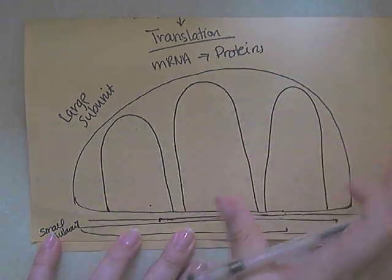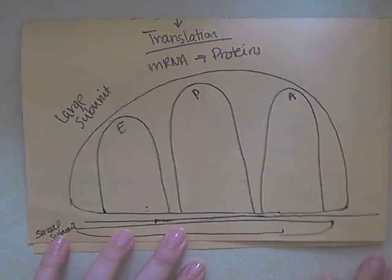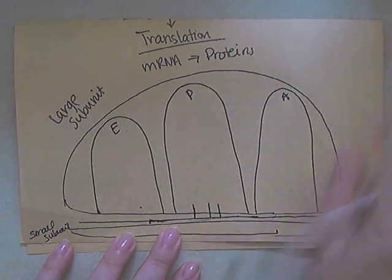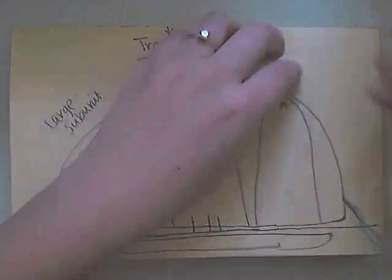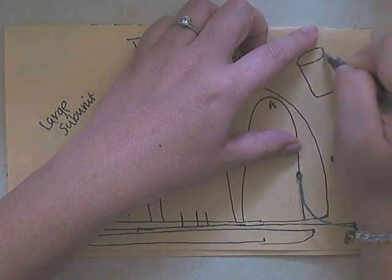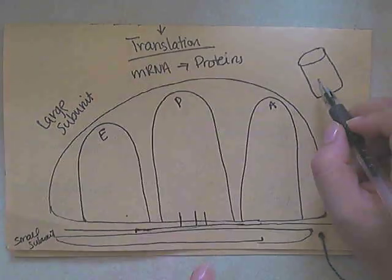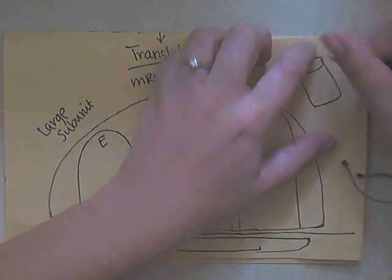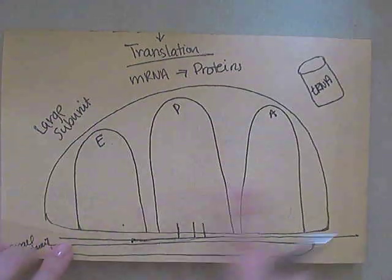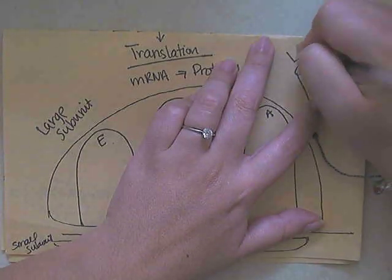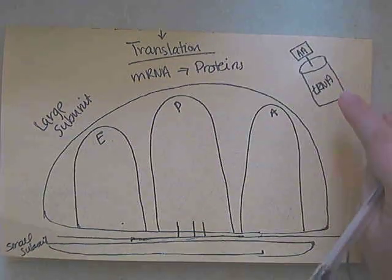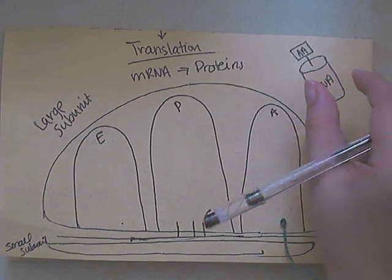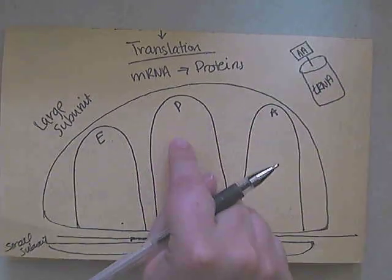These different spots — think of them as parking spaces — are labeled the E, P, and A site. For each triplet on the mRNA, for each codon, this is going to line up with the parking space and allow another molecule called tRNA. This tRNA has the anticodon that matches with the codon, so it knows it's its turn to come into the parking space. As the tRNA molecule comes into one of the parking spaces, it's bringing along with it an amino acid.